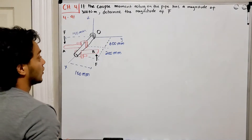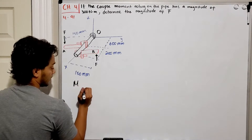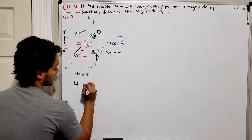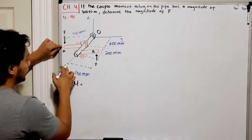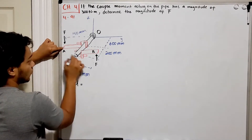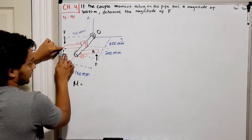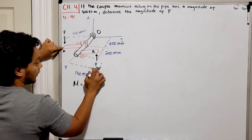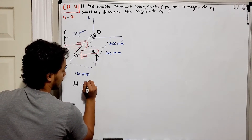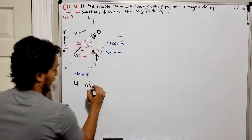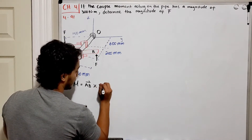We have a couple force, and we know that a moment in 3D is going to be equal to a vector distance. I always pick the distance between the two forces. So my force F_A and my force F_B — the distance is going to be between A and B, giving us vector AB — and we're going to do the cross product between vector AB and my force vector.